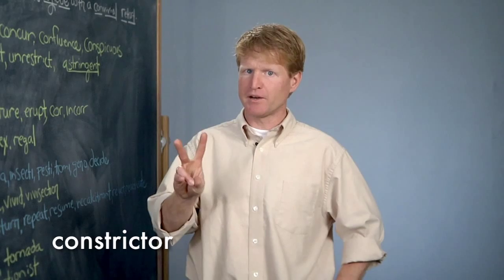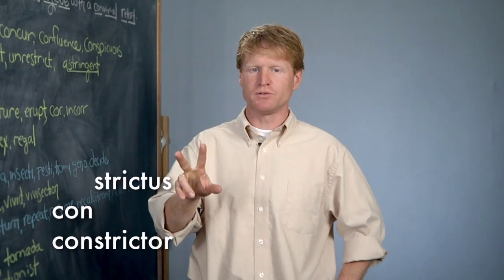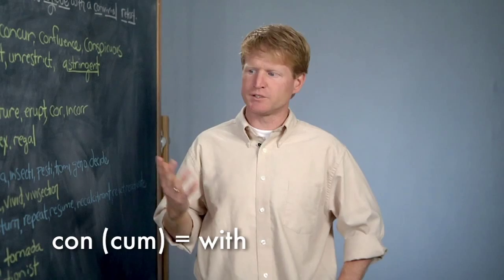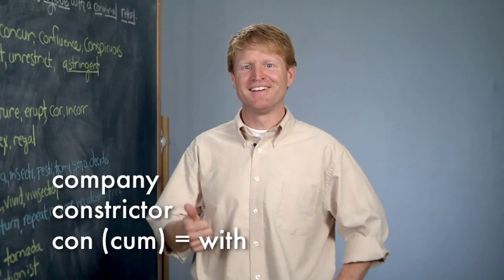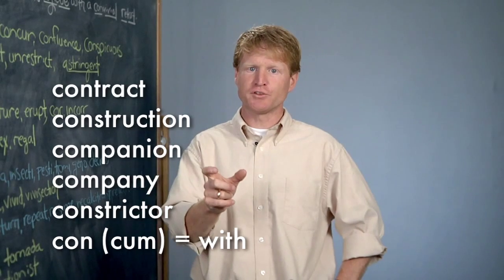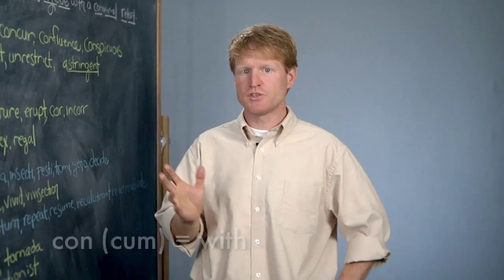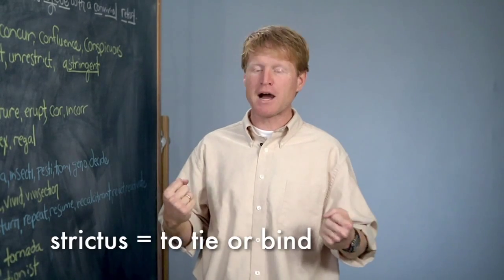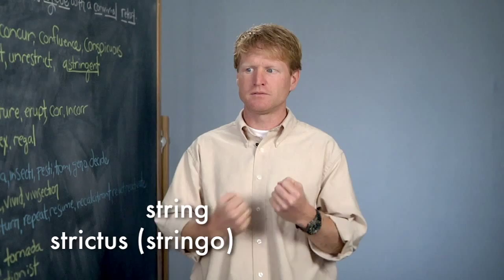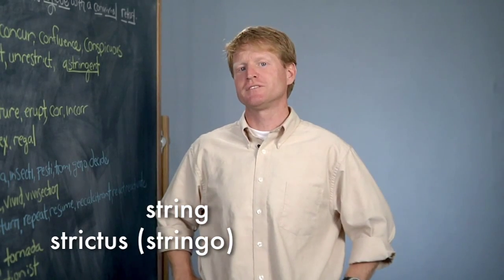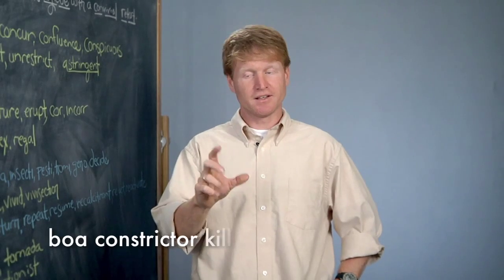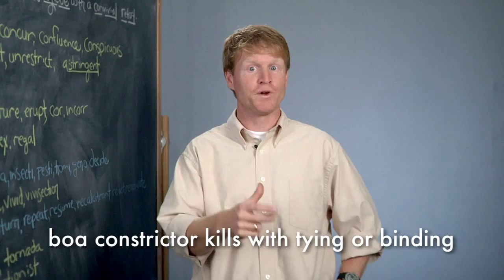Look at 'constrictor.' It comes from two Latin words: 'con' or 'com,' and 'strictus.' Con or com means 'with' — that's where we get words like constrictor, company, companion, construction, contract, and on and on. Strictus means to tie or bind. Another way to say it is 'stringo' in Latin, which is where we get the word 'string' — what we use to tie or bind things. So a boa constrictor is a snake that kills its victims by tying, constricting, or binding.